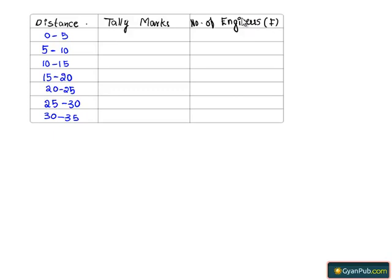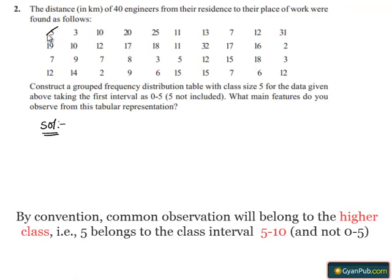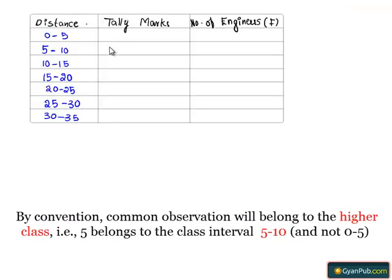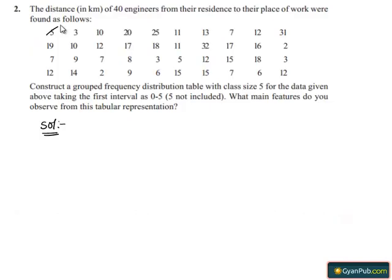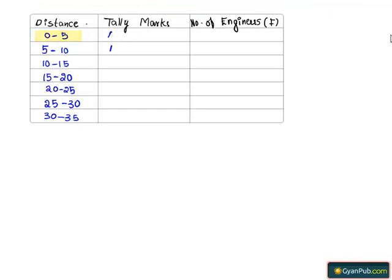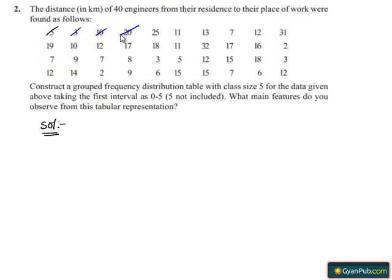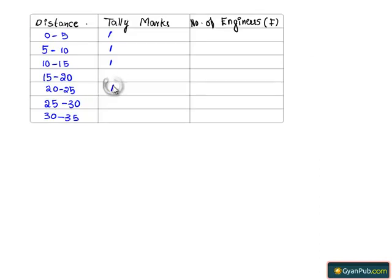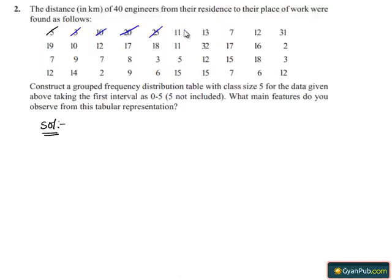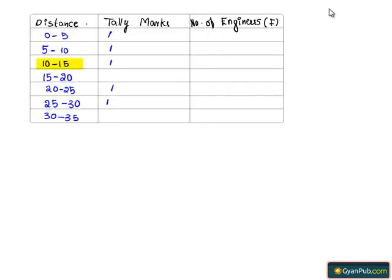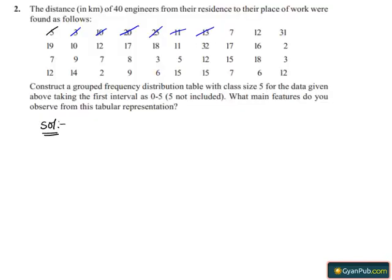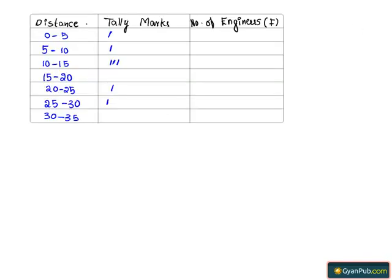Now let's tally the data. 5 falls in the interval 5 to 10, 3 falls in 0 to 5, 10 falls in the third column, 20 falls in between, 25 is marked, 11 falls in the third column, 13 falls in the third column, 7 is tallied, and we continue as follows.